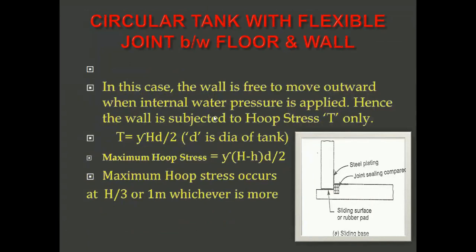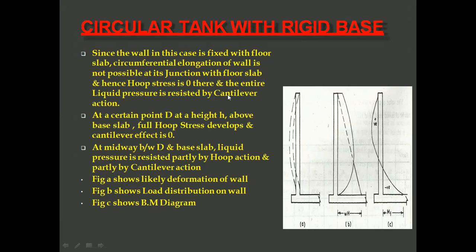With a flexible joint between floor and wall — as seen in the diagram showing steel plating, sliding surface of rubber pad, and joint ceiling — the wall is free to move outward when internal water pressure is applied. Hence the wall is subjected to hoop stress T only, where T can be calculated from the formula. The maximum hoop stress occurs at H/3 or one meter from the base, whichever is more.